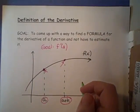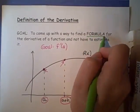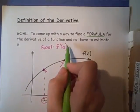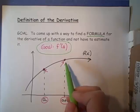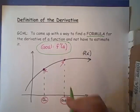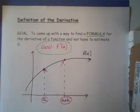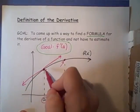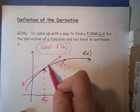In this video we are going to try to find a formula for the derivative instead of always having to estimate it. I have a function f here and my goal is to find the slope of this function at x equals a. The slope of this function is defined to be the slope of the tangent line. I've got my tangent line drawn in here, and f prime of a is the slope of this pink line.